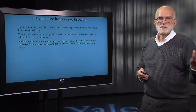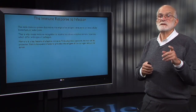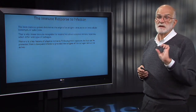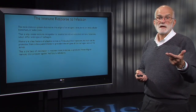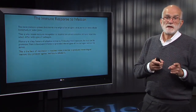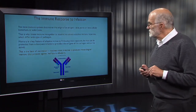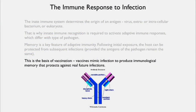Following that initial exposure, the host is protected from subsequent infection, provided that the antigens of the pathogen remain the same. That is the basis of vaccination — vaccines mimic infection to produce an immunological memory, and it's that immunological memory that protects against future infections. Here is what an antibody to an antigen looks like: it's a Y structure with a variable part and a constant part, with four units at its tips that can be recombined in many different combinations. This is the business end of the adaptive immune system.